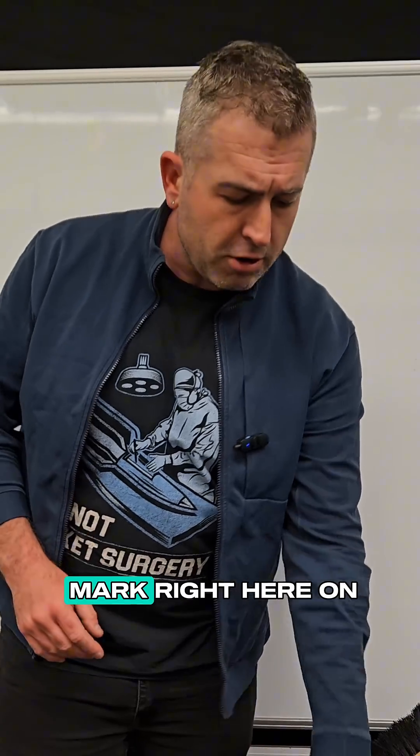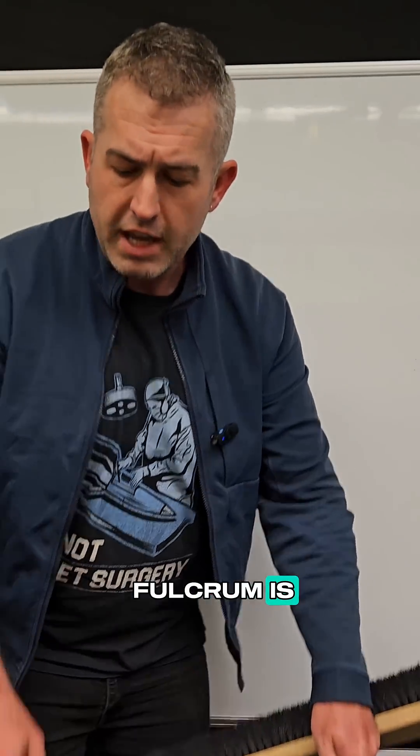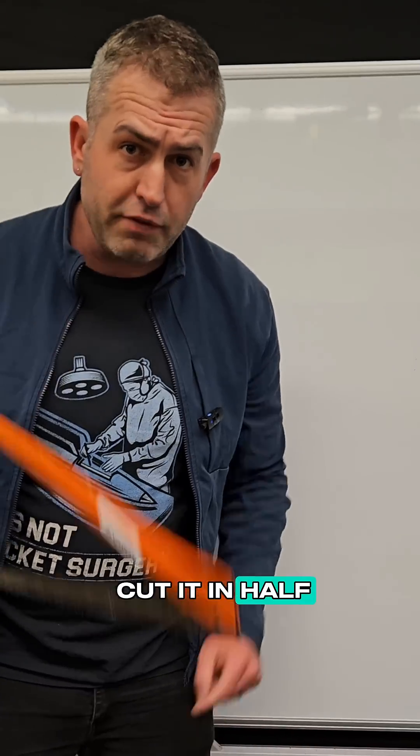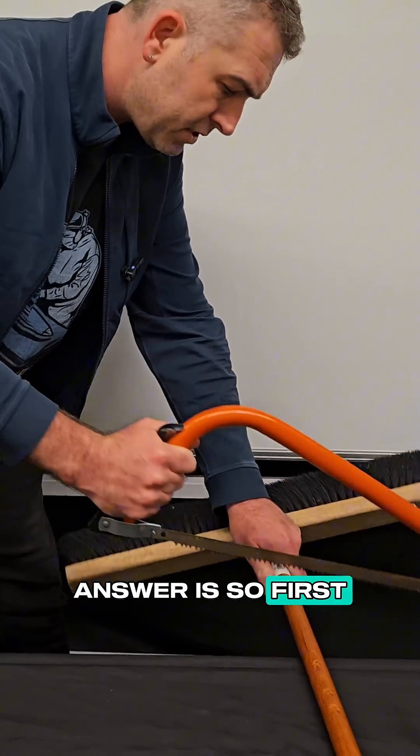Okay, so I made a little mark right here on the broomstick to show where that fulcrum is. And now I'm going to use this saw to cut it in half, and let's weigh each side and see what the correct answer is. So first the cut.